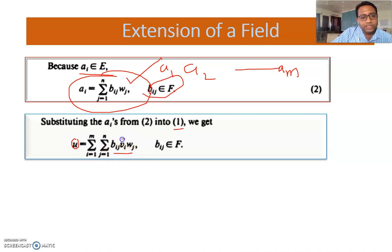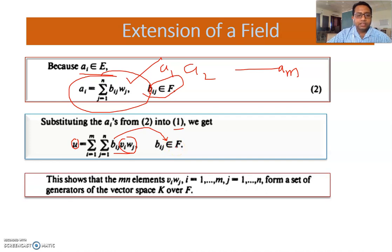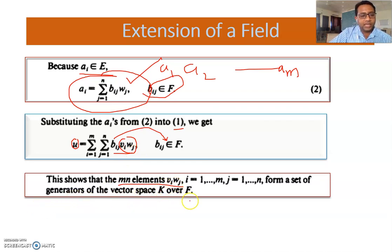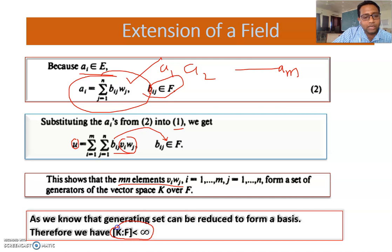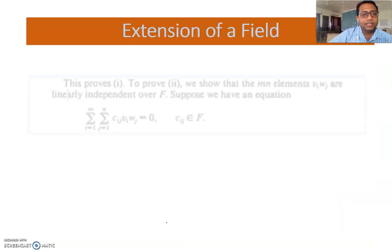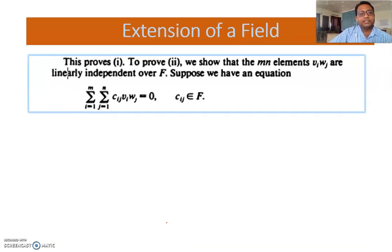इसका मतलब K का element {vᵢwⱼ} के terms में express हो गया — scalars F में से लिए हैं। तो {vᵢwⱼ} forms a set of generators of vector space K over F। Generating set को reduce करके basis बनाई जाती है, तो गिनती finite ही आएगी। So that's why dimension of K over F is finite — first point proved।